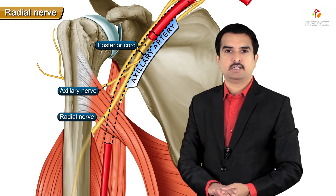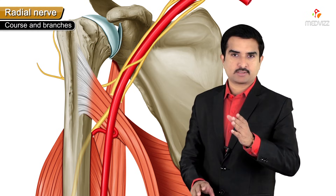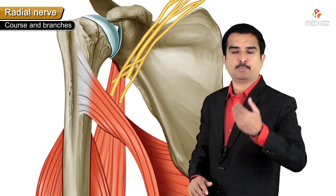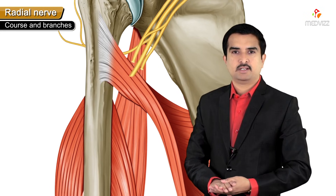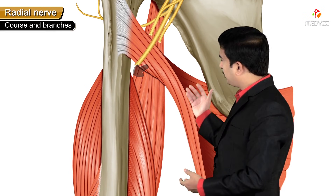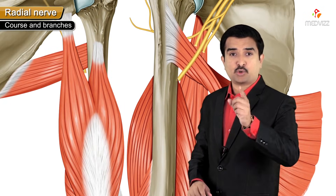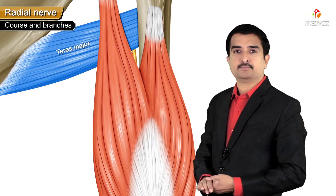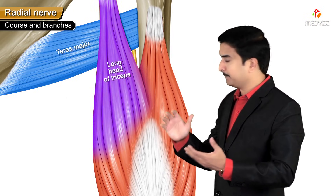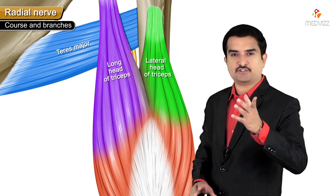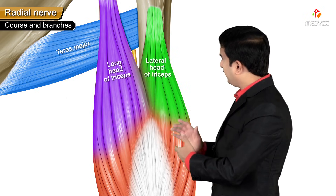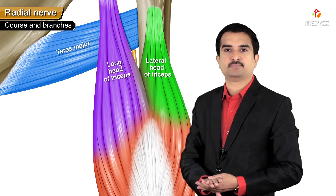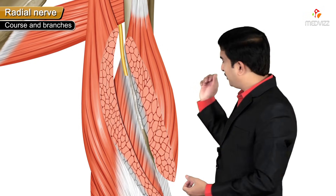After its origin from the posterior cord of the brachial plexus, the radial nerve travels from anterior to posterior via a triangular interval, which is bounded by teres major superiorly, the long head of triceps medially, and the lateral head of triceps laterally. From this triangular interval, it enters the posterior aspect of the arm.